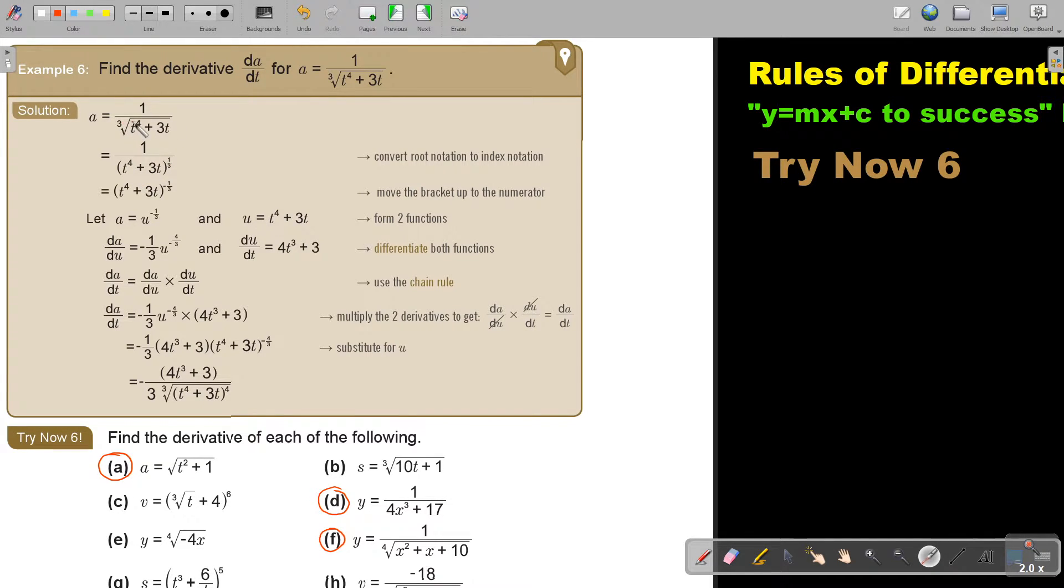First get rid of the root. Take it to fraction form. Basically put that in a bracket, put it over 1, and it's a cube root so that's 3. Now you can take it up by changing it to a negative. So now it's ready to differentiate. Now I'm going to use my chain rule. So use that U for the inside and separate your functions.